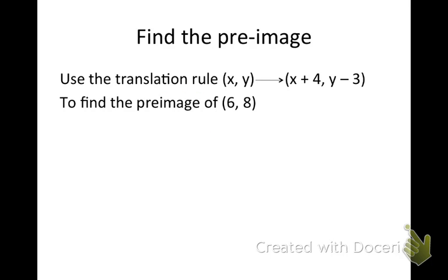All right, and the very last thing that you're going to be doing is given a translation rule, I would like you to find the pre-image if the image is 6, 8. So I'm giving you the rule and the image and asking you to find the pre-image. Here's how you would do that. You would take your rule and say, hey, my rule, if I applied the rule, I'm going to get 6. So what was x before that? And then you just solve for x.